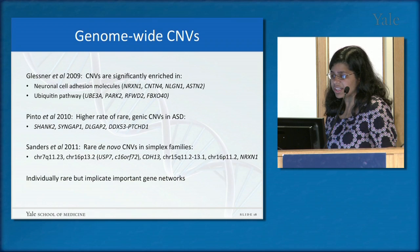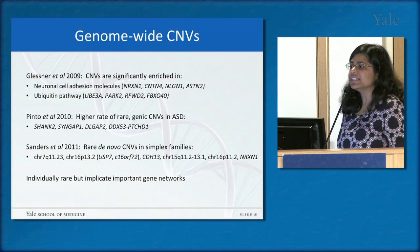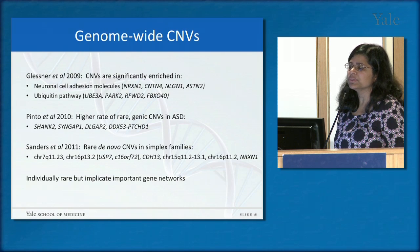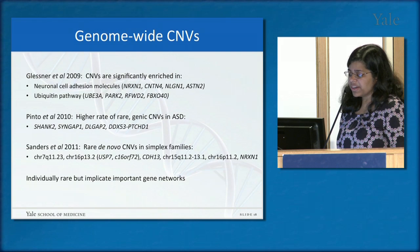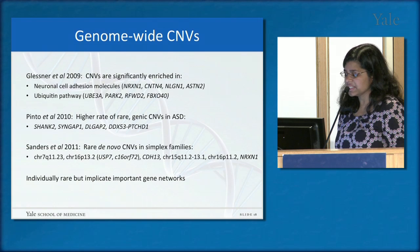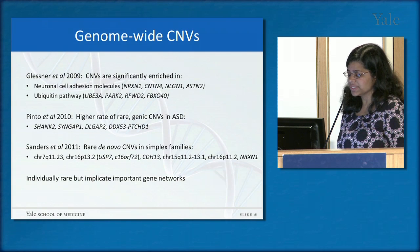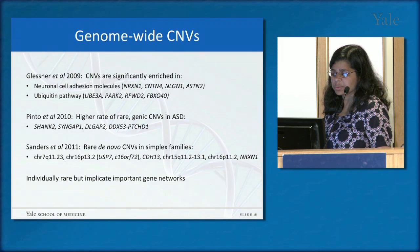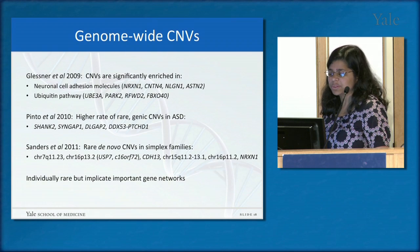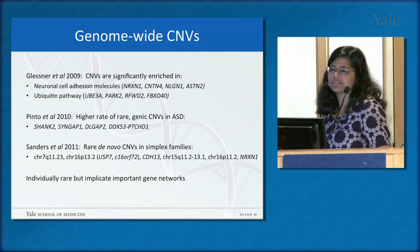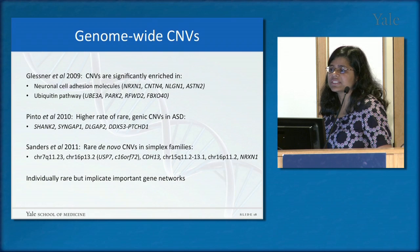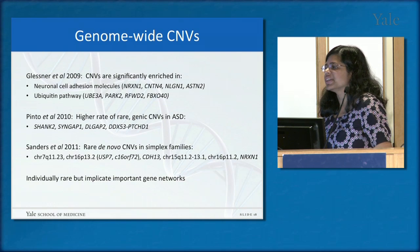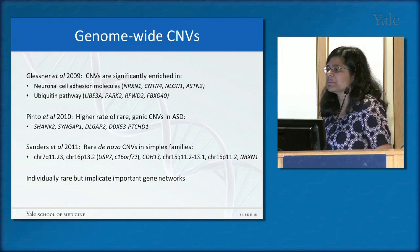Our group at Yale published a genome-wide CNV study finding that in simplex families — those with only one affected child — there is a higher rate of rare de novo CNVs. Comparing individuals with autism to their unaffected siblings, the individuals with autism had significantly more of these rare de novo CNVs. Even though these are individually rare causes of autism, they are important because they implicate gene networks and give us clues to the pathophysiology of the disorder.